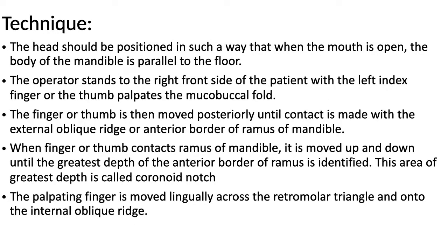Now we will discuss the technique of how to proceed with this nerve block. First of all, the head should be positioned such that when the patient is opening the mouth, the body of the mandible is parallel to the floor. The operator stands to the right front side of the patient with the left index finger or thumb palpating the pterygomandibular raphe. The finger or thumb is then moved posteriorly until contact is made with the external oblique ridge or anterior border of the ramus of the mandible. After doing so, we move our finger up and down to find the greatest depth of the anterior border of the mandible.